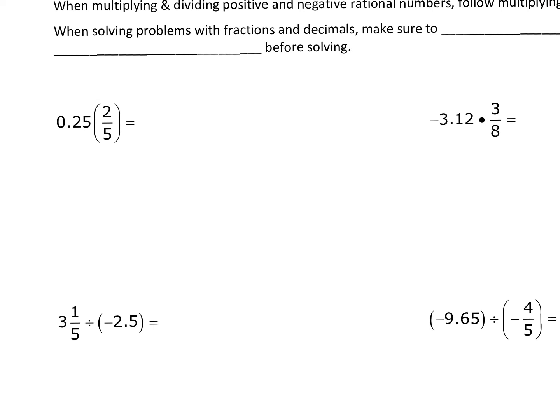The first one is 0.25 times two-fifths. We know that 0.25 is one-fourth, so we're going to use one-fourth times two-fifths. You can cross-cancel the two and the four, or if you like you could just multiply across: one times two is two, four times five is twenty.